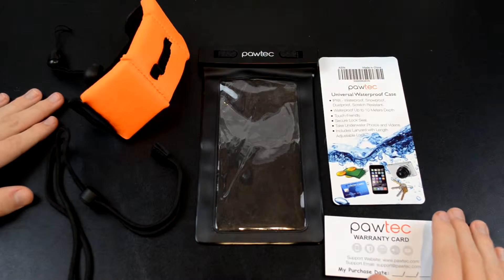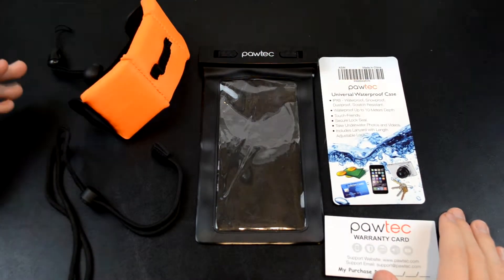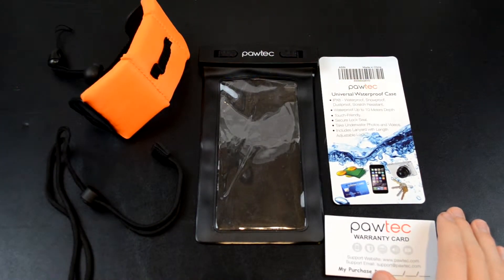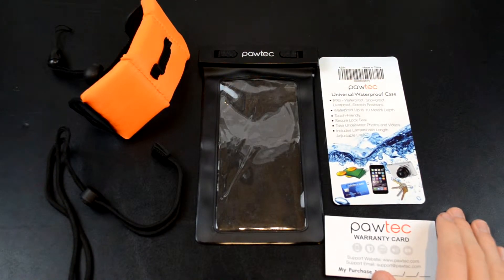Hey guys, what's up? It's NarrowCraft back again bringing you another product review. This time we have a product from Pawtec. I'll be reviewing the Pawtec universal waterproof pouch. You can find this product on Amazon or on the Pawtec website. It's only $10 on Amazon right now. Link will be included in the description down below.